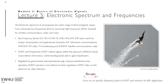Lecture number five: electronic spectrum and frequencies. When we refer to spectrum, we refer to the entire range of electromagnetic waves, from extremely low frequencies to extremely high frequencies. That's essential — that's the principle we use for wireless communications, radars, and much more.